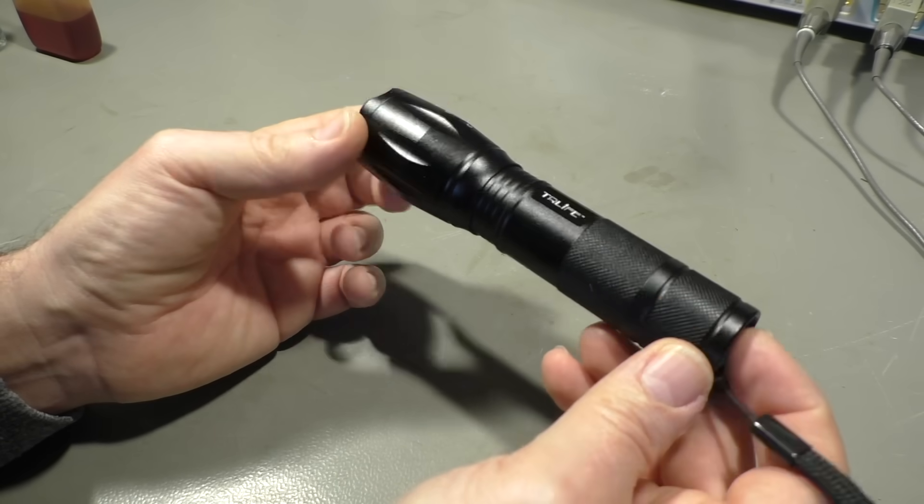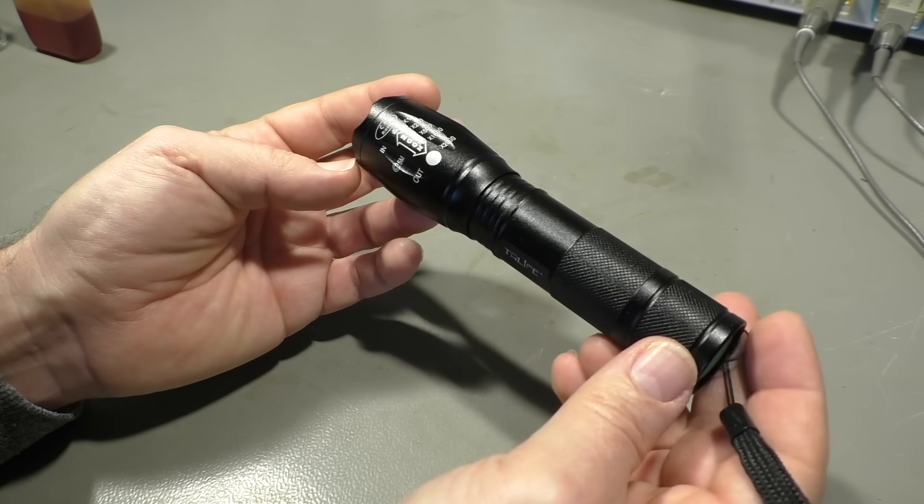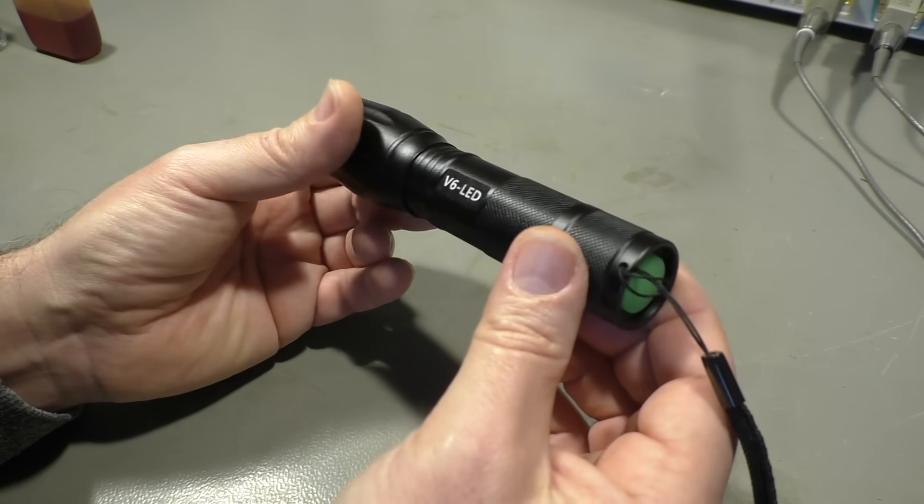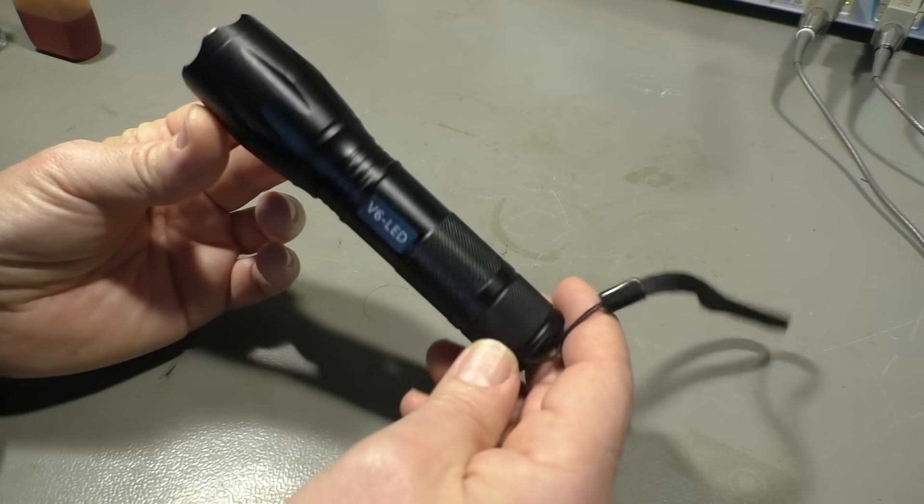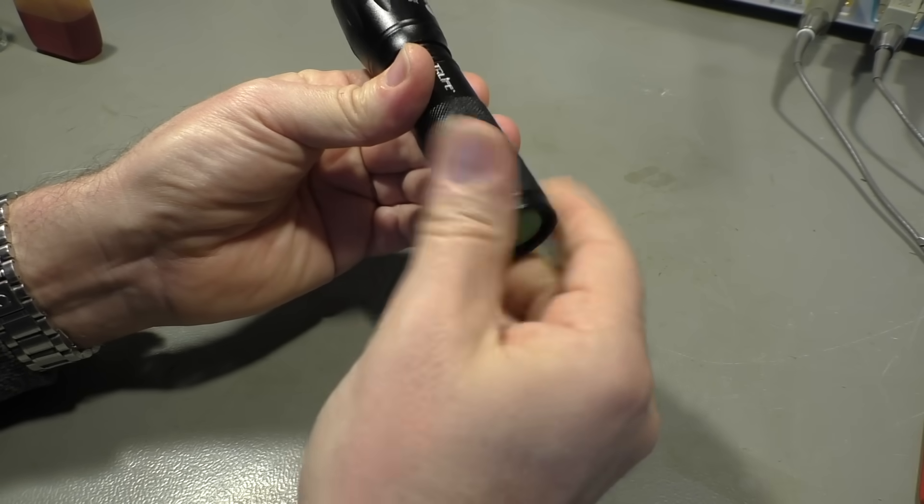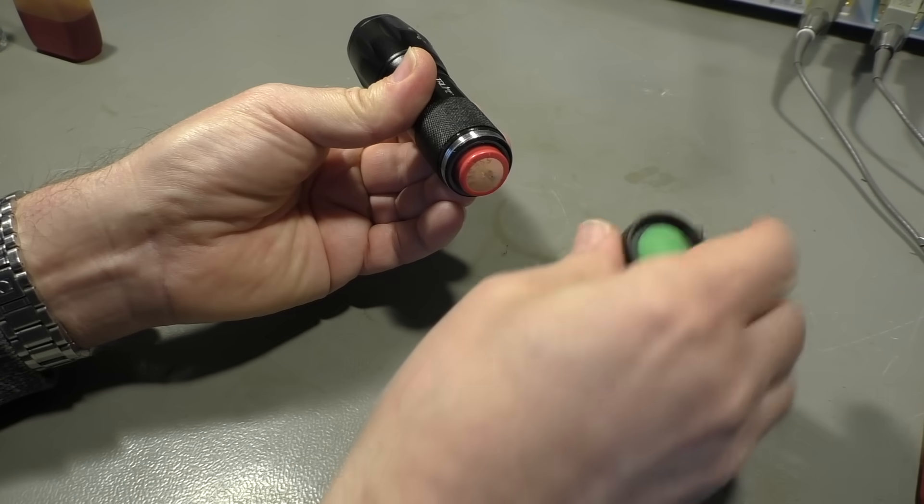And in fact all of these small flashlights do have the same chip inside that can blink, morse code, etc. And I will show you today how to get rid of that function. I already modified three of these lamps because I bought four.